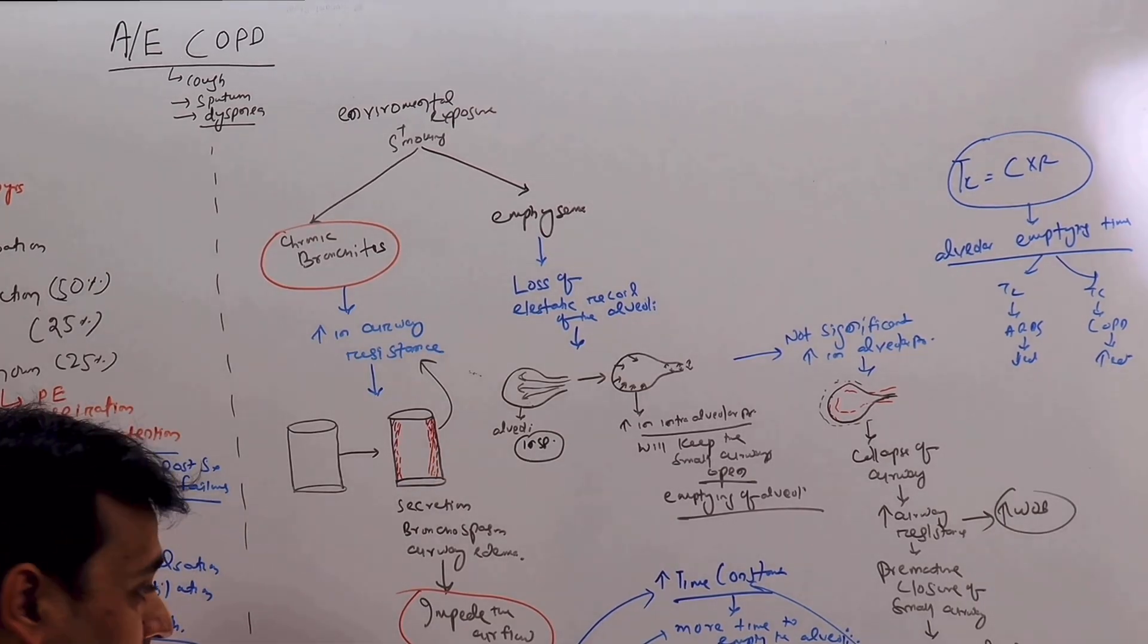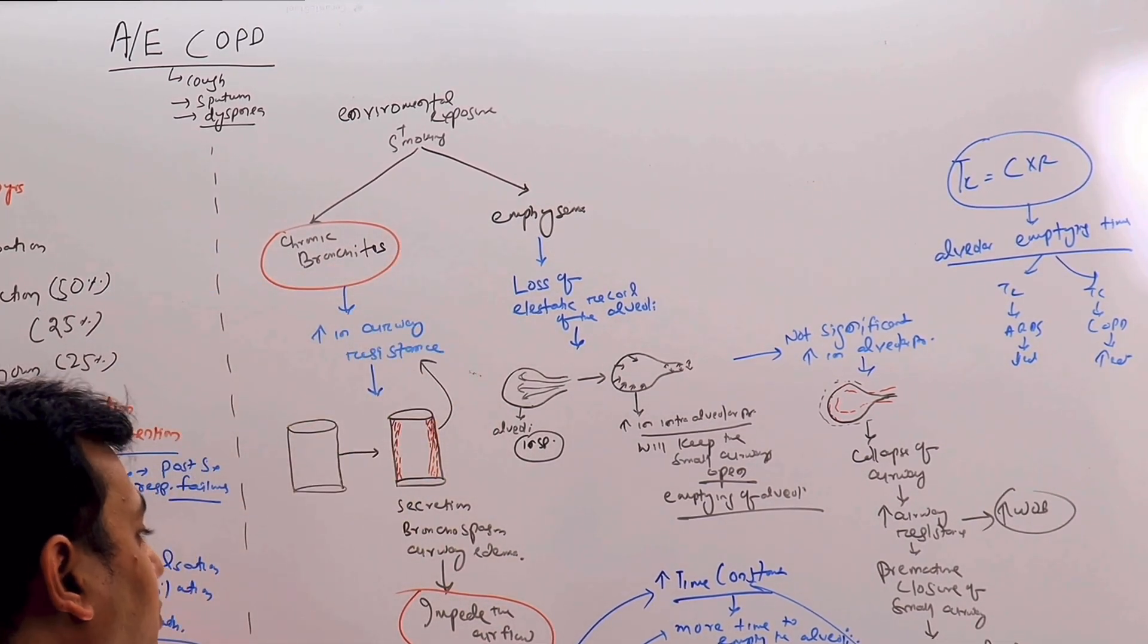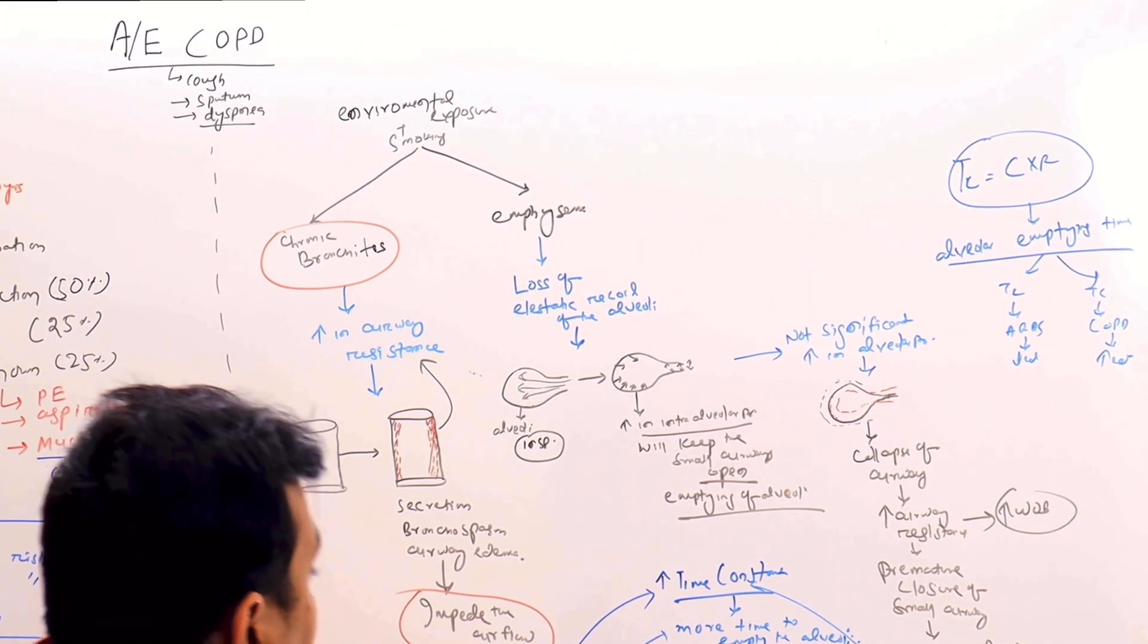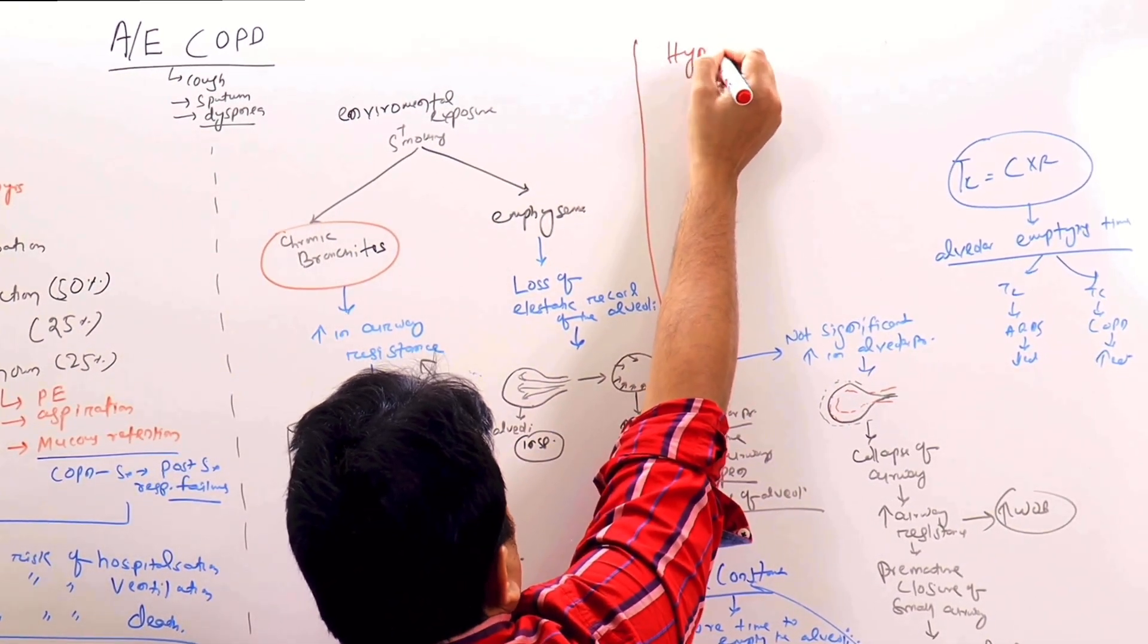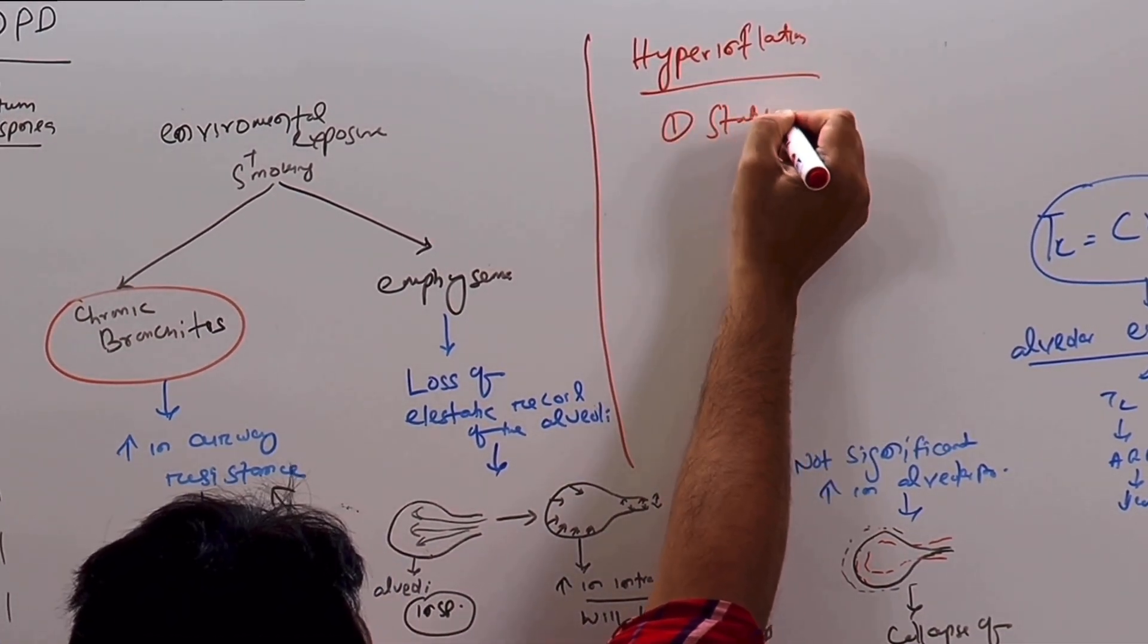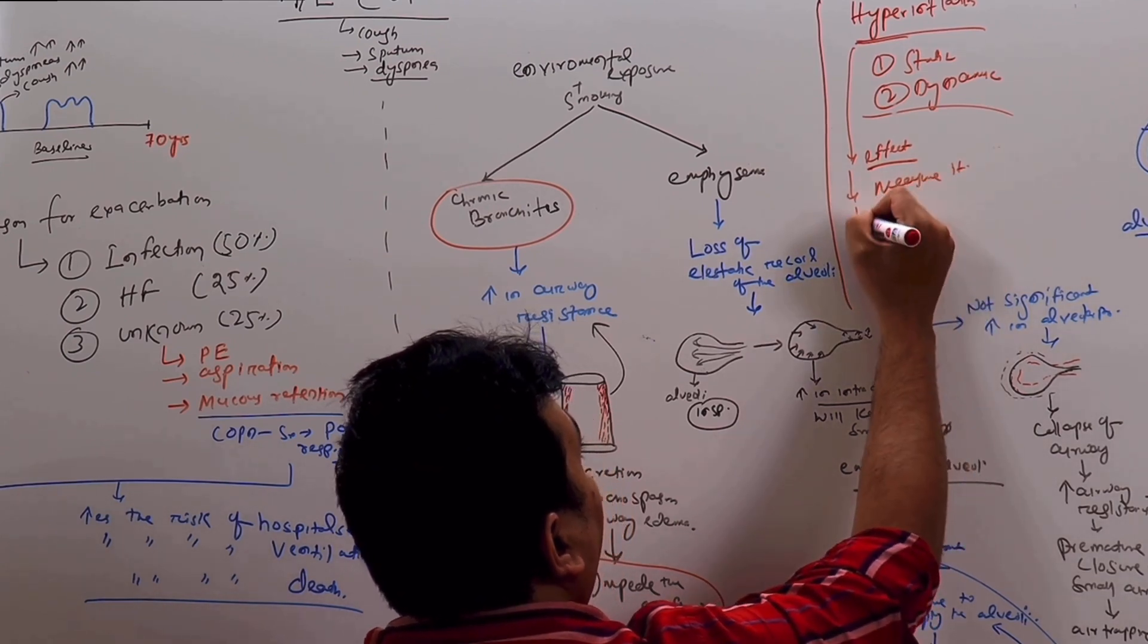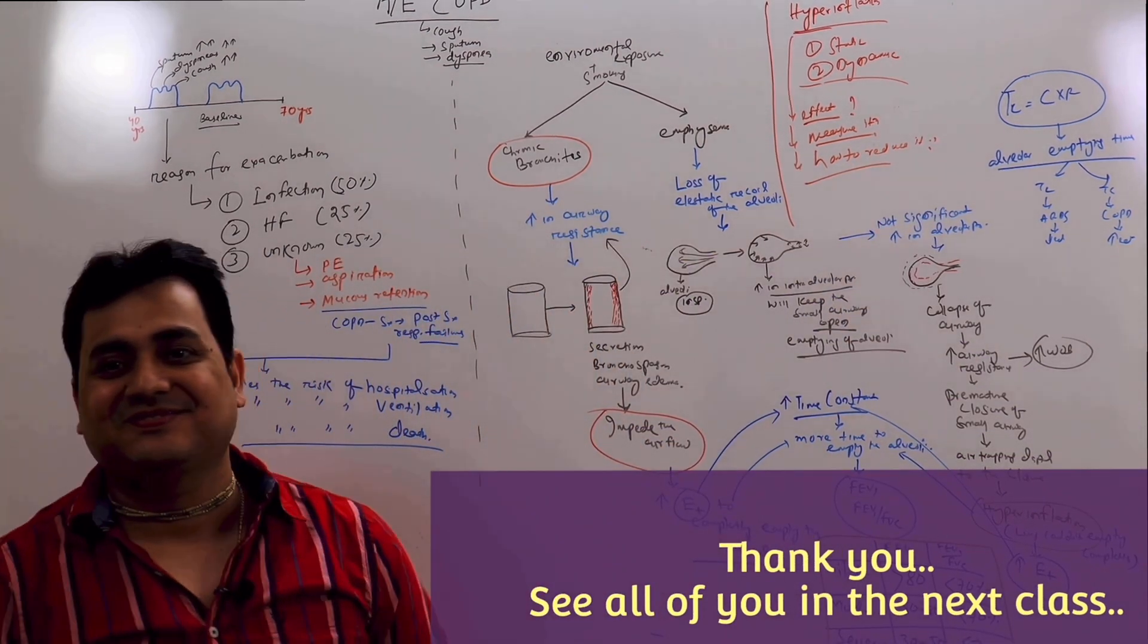So now, at the end of our today's discussion, we can conclude that, because of both the pathophysiology, there is impedance of air flow out of the lung at the end of expiration, producing some amount of air to stay inside the lung, that produces hyperinflation. So now, the next class, we will be discussing about the hyperinflation. So hyperinflation can be of two types, static and dynamic, its effect, how to measure it, and how to reduce it. Thank you very much. Thank you.